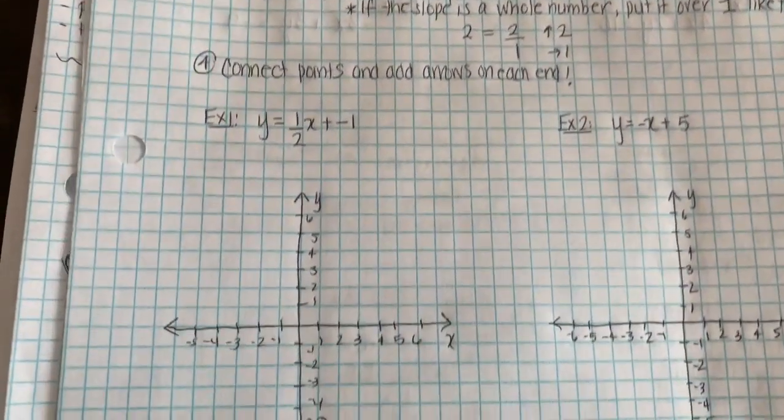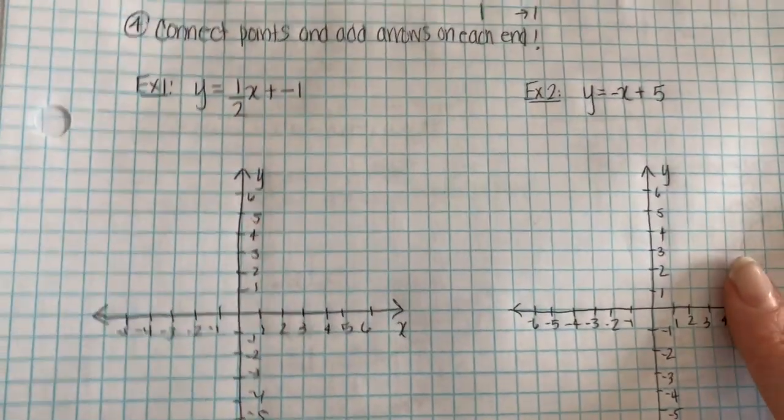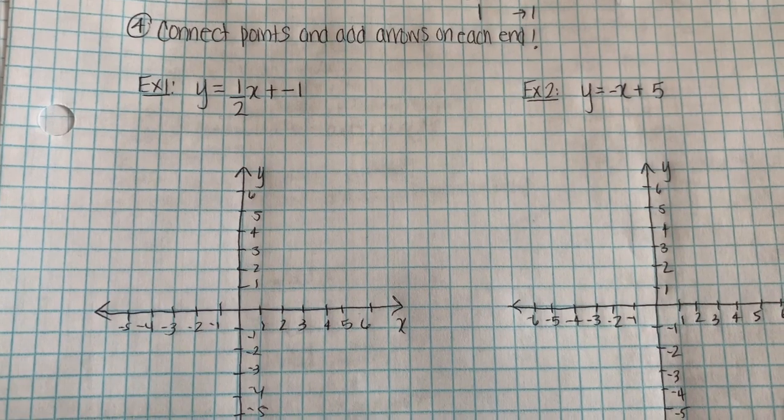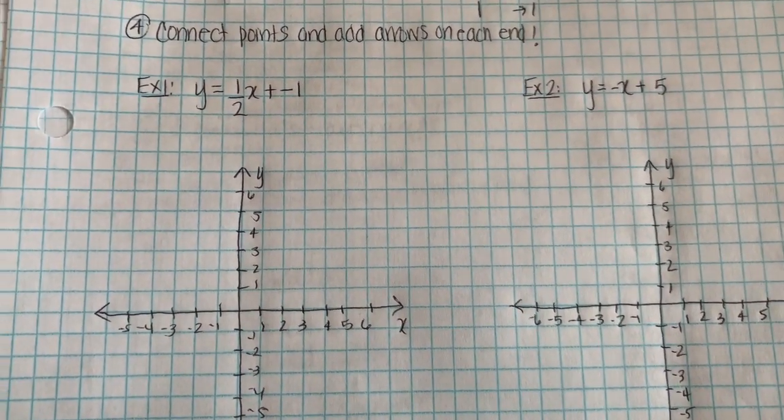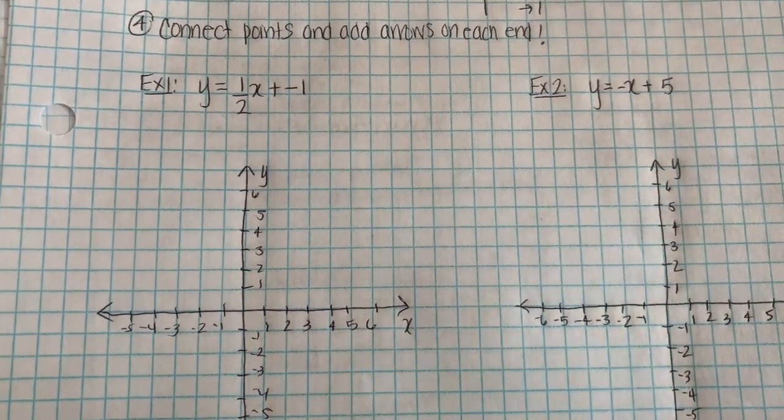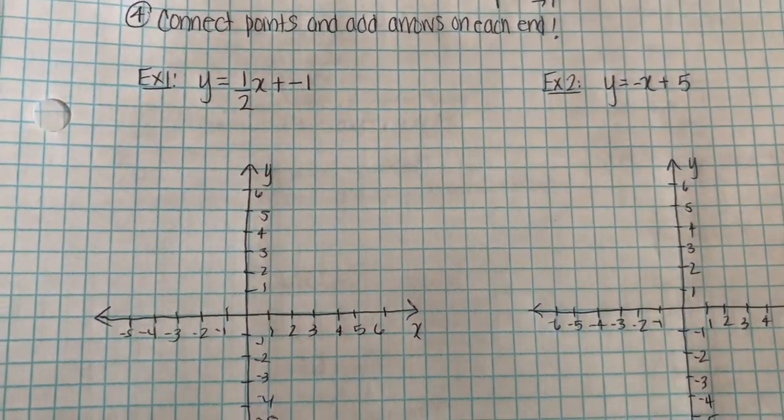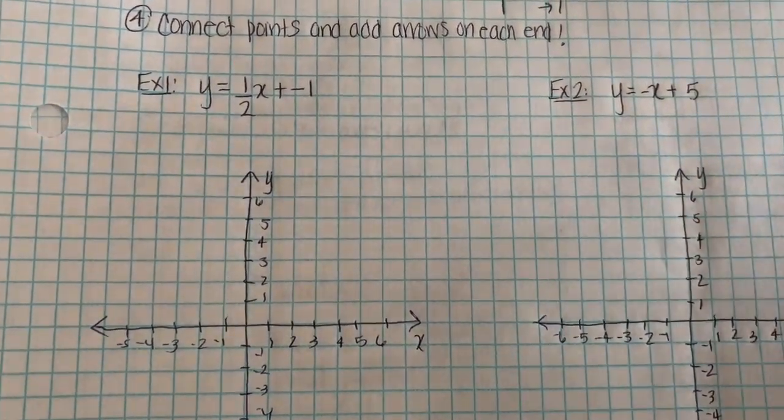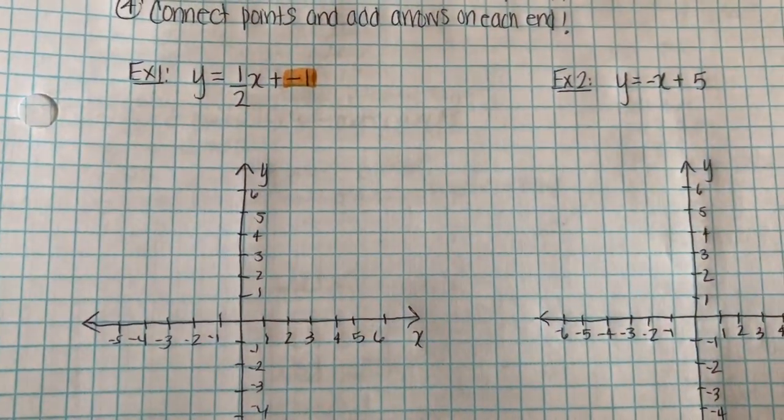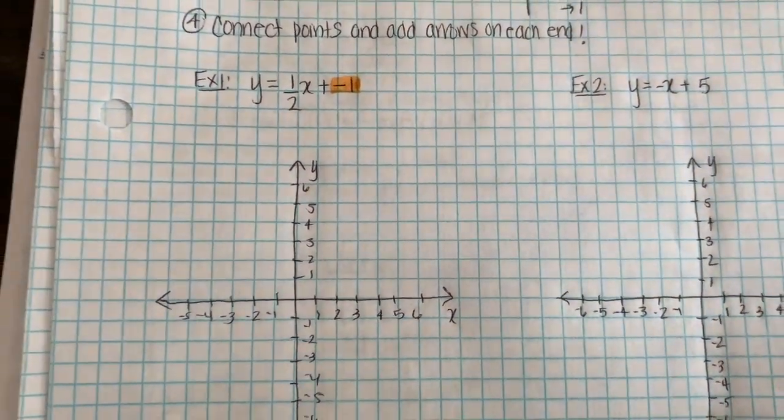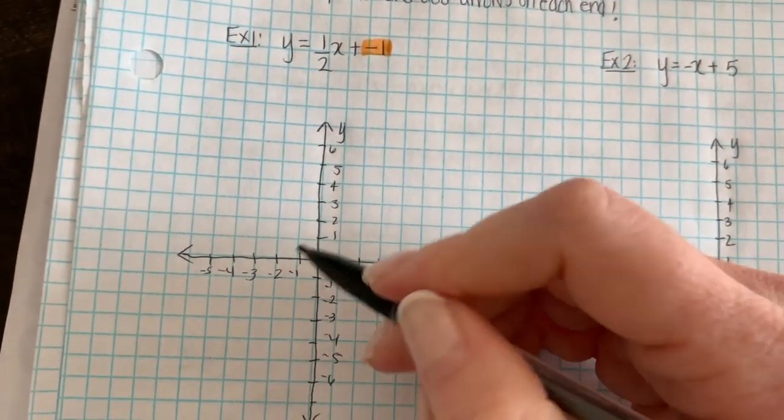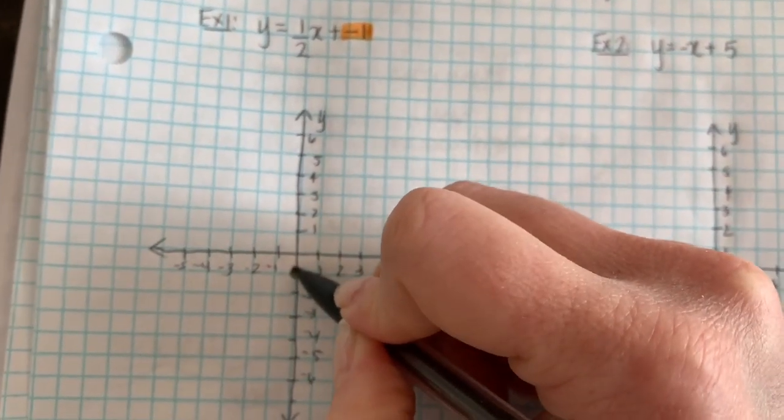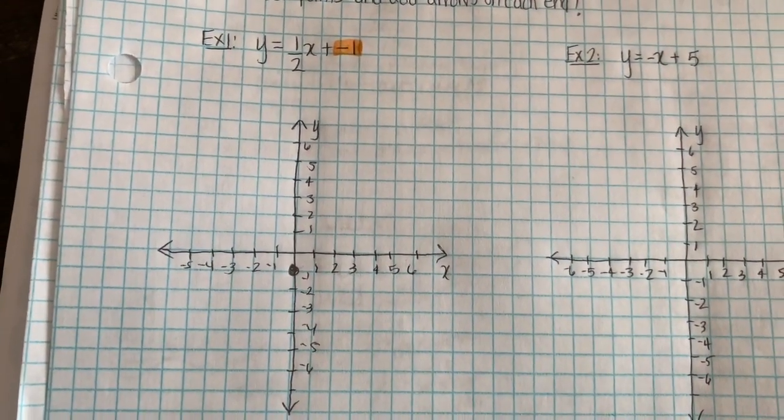So let's start with an example. For example 1, we're going to graph y equals 1 half x minus 1. So first thing you're going to do is determine your b. So your b is where we begin. Your b value is negative 1. So you're going to go right to your graph. On your y-axis, you're going to find negative 1 and plot a point right there. b is where we begin.